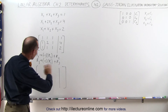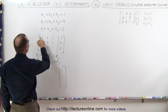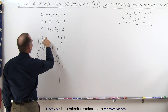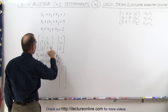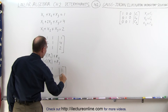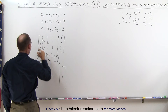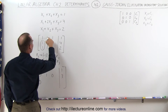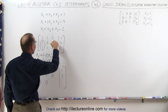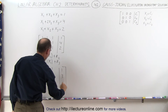When we do that, the augmented matrix looks as follows. The first row does not change: 1, 1, 1, 1. For the second row: negative 1 plus 1 is 0; negative 1 plus 2 is 1; negative 1 plus 1 is 0; negative 1 plus 4 is 3. For the third row: negative 1 plus 1 is 0; negative 1 plus 1 is 0; negative 1 plus 1 is 0; and negative 1 plus 2 is 1.